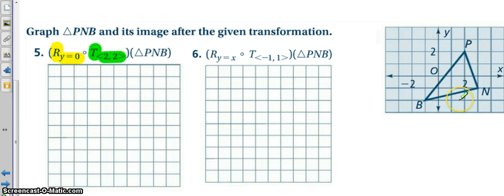So, we're going to take our shape PNB, we're going to translate it, then we're going to reflect it. So, go ahead and try that on your own, draw it on your coordinate grid, and come back for the answer. If you can, as well, try number 6. That is going to be a reflection on the line Y equals X, which is actually the diagonal line, and then we will have a translation 1 to the left and 1 up.